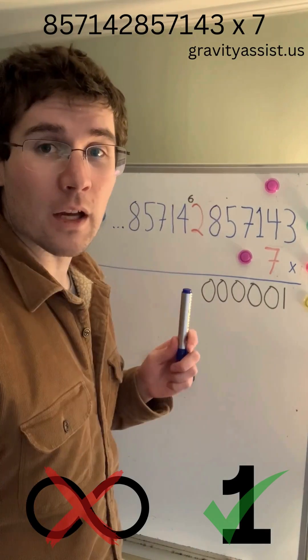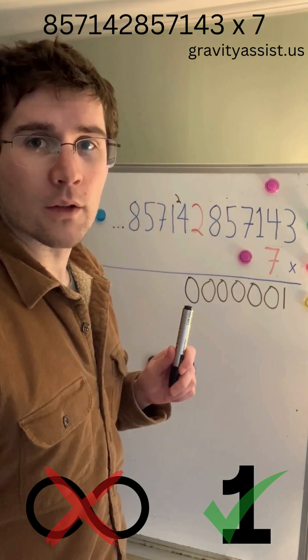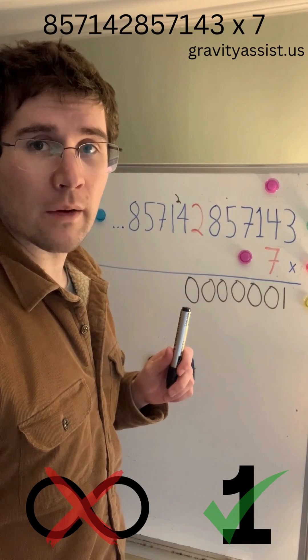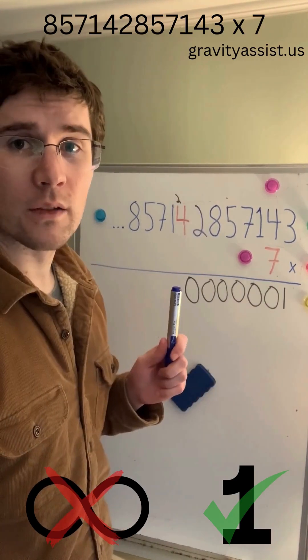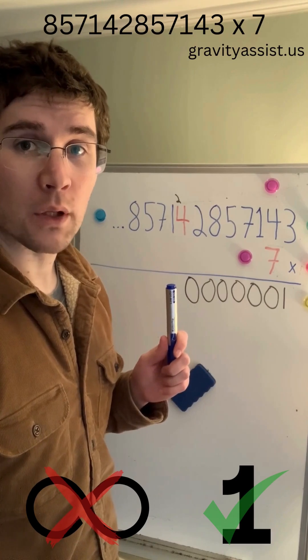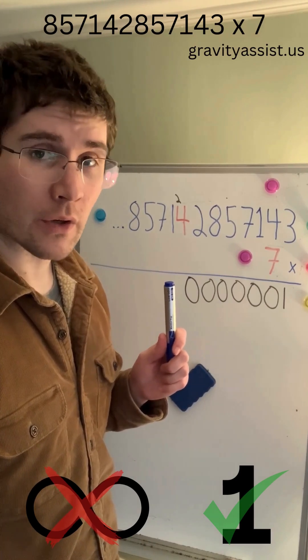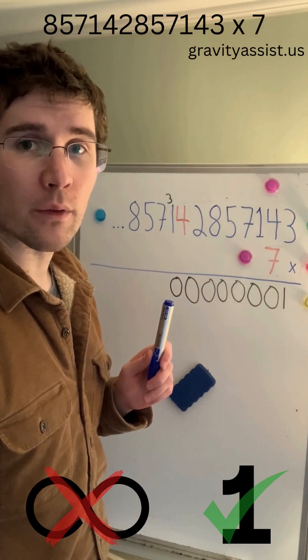7 times 2 equals 14 plus 6 equals 20, so we'll put a 0 down here and carry the 2. 7 times 4 equals 28 plus 2 equals 30, so we'll put a 0 down here and carry the 3.